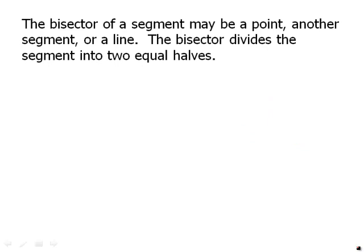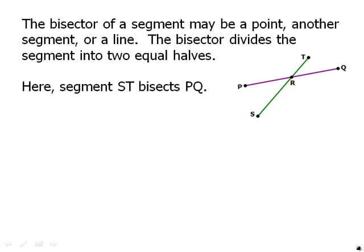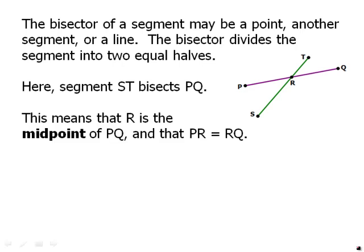Similarly, the bisector of a segment may be a point, another segment, or a line. The bisector divides the segment into two equal halves. So notice here, segment ST bisects PQ. Also notice it's definitely true that PQ does not bisect ST because SR is clearly bigger than RT. So the fact that ST bisects PQ means that R is the midpoint of PQ and that PR equals RQ. We've divided it into two equal halves. And again, that's always what bisecting means.